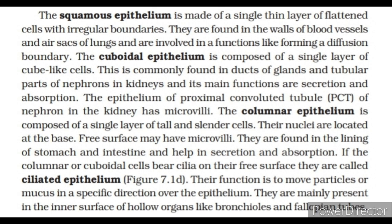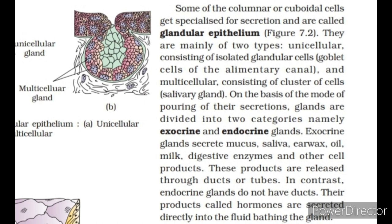Ciliated epithelium is mainly present in the inner surface of hollow organs like bronchioles and fallopian tubes. Some columnar or cuboidal cells get specialized for secretion and are called glandular epithelium. They are mainly of two types: unicellular, consisting of isolated glandular cells such as goblet cells of the alimentary canal, and multicellular, consisting of a cluster of cells such as salivary glands. On the basis of the mode of pouring of their secretions, glands are divided into two categories: exocrine and endocrine glands.